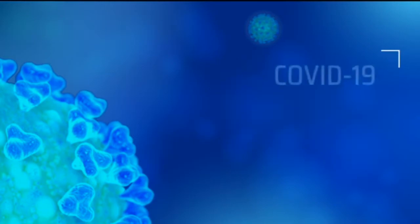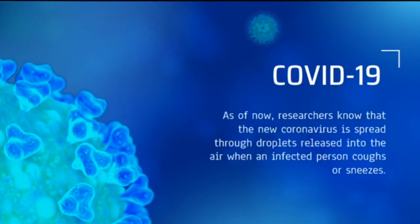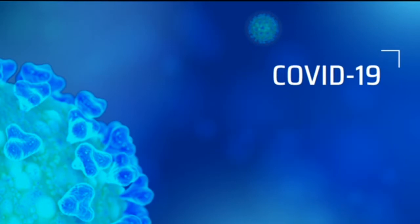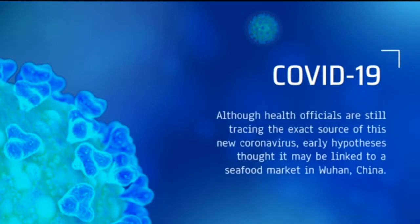COVID-19 is an infectious disease caused by a recently discovered virus known as SARS-CoV-2, or coronavirus. Before the outbreak originated in Wuhan, China in December 2019, there was no information about this virus. Researchers now know that the new coronavirus spreads through droplets released into the air when an infected person coughs or sneezes. The droplets generally do not travel more than a few feet, and they fall to the ground or onto a surface within a few seconds. This is why physical distancing is effective in preventing the spread.